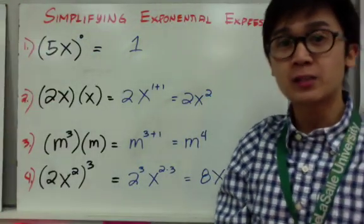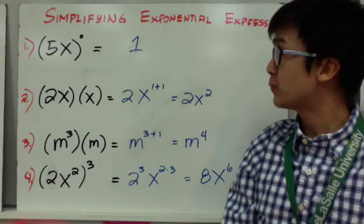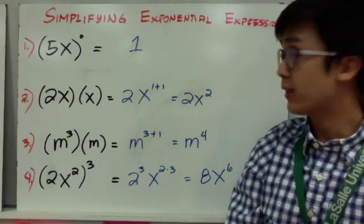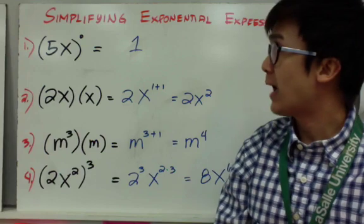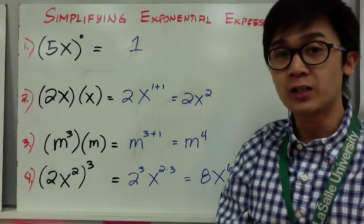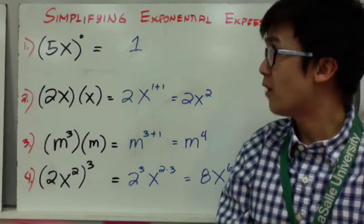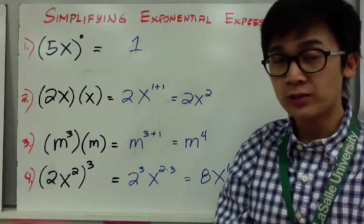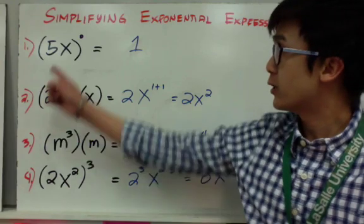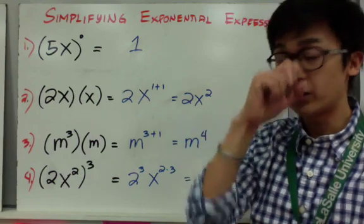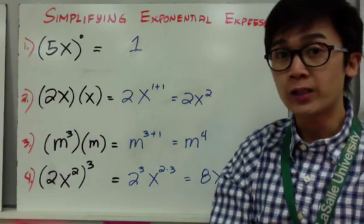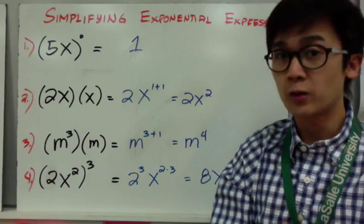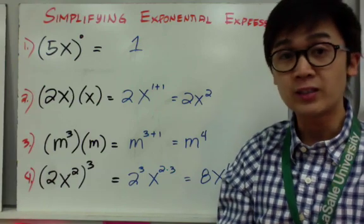Now let's simplify some expressions using the laws of exponents. For number 1, we have the quantity 5x raised to 0. We know by the law of exponents that any number or expression raised to 0 will turn into 1. So number 1 is simply 1 — no matter how big or small your expression is, if you raise it to 0, it's always going to be 1.